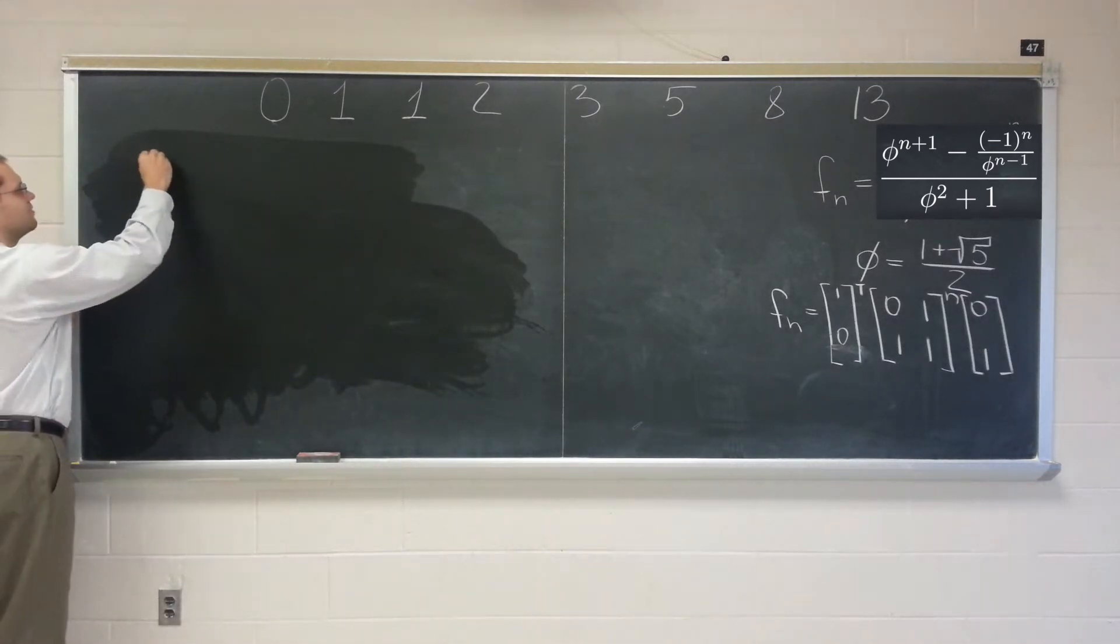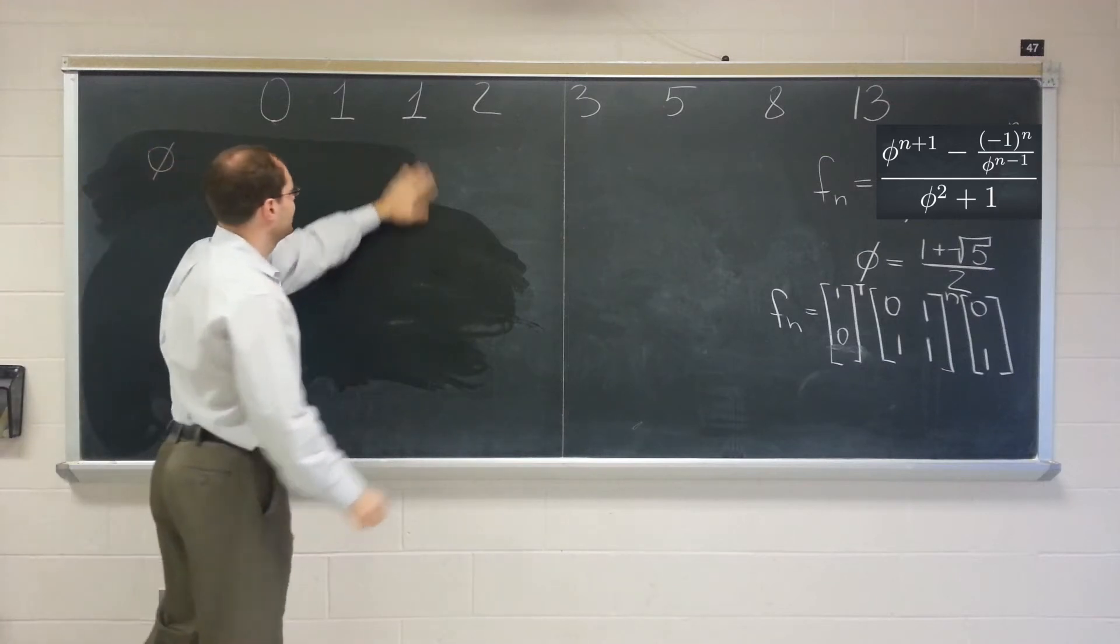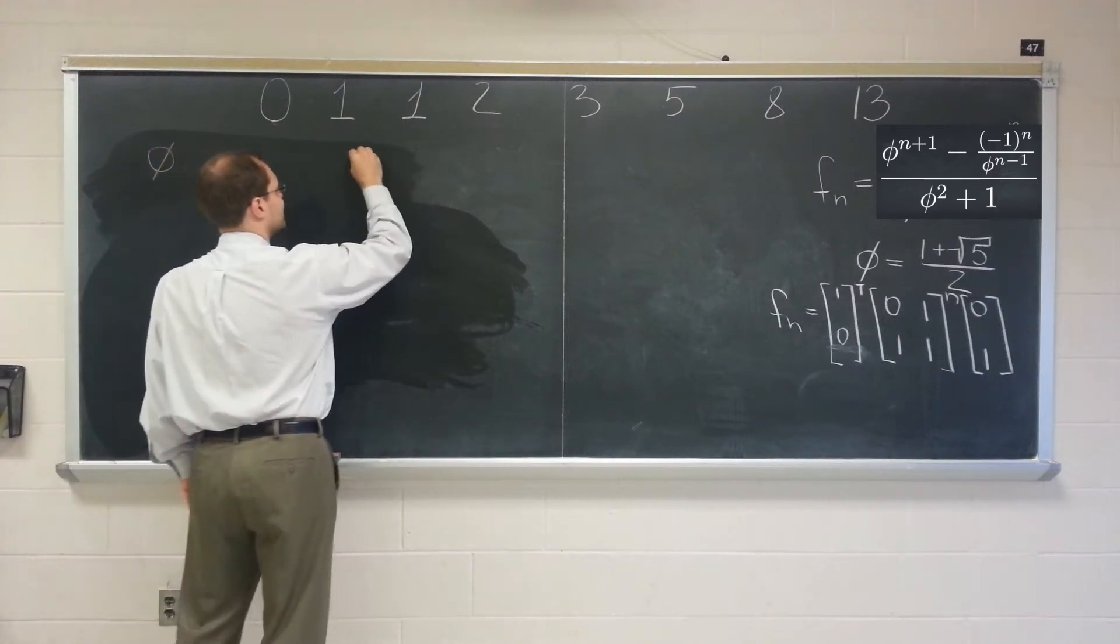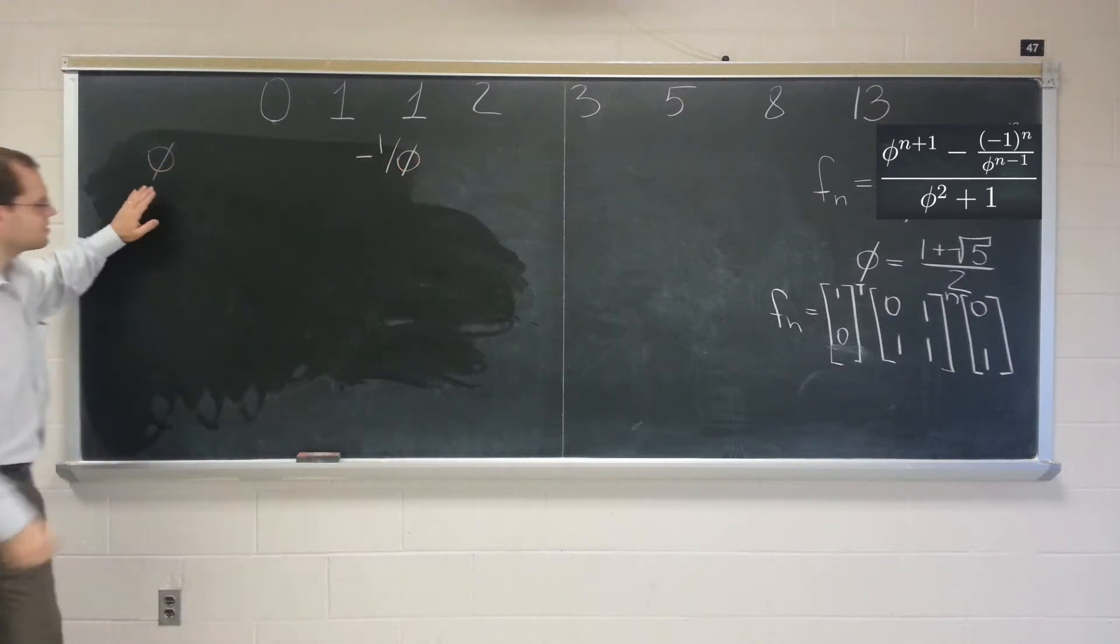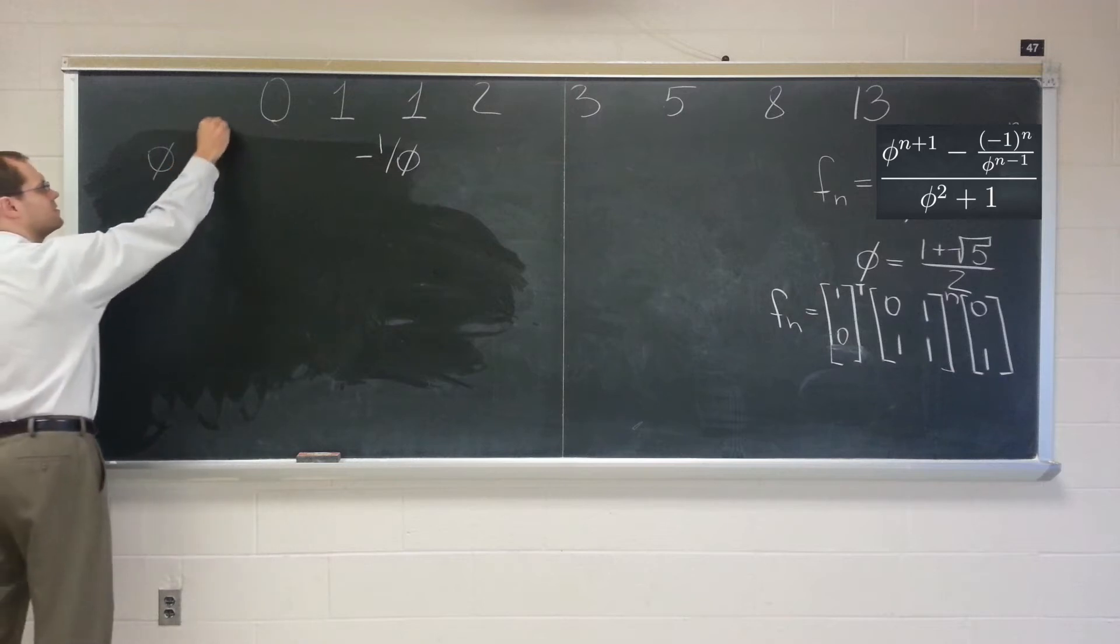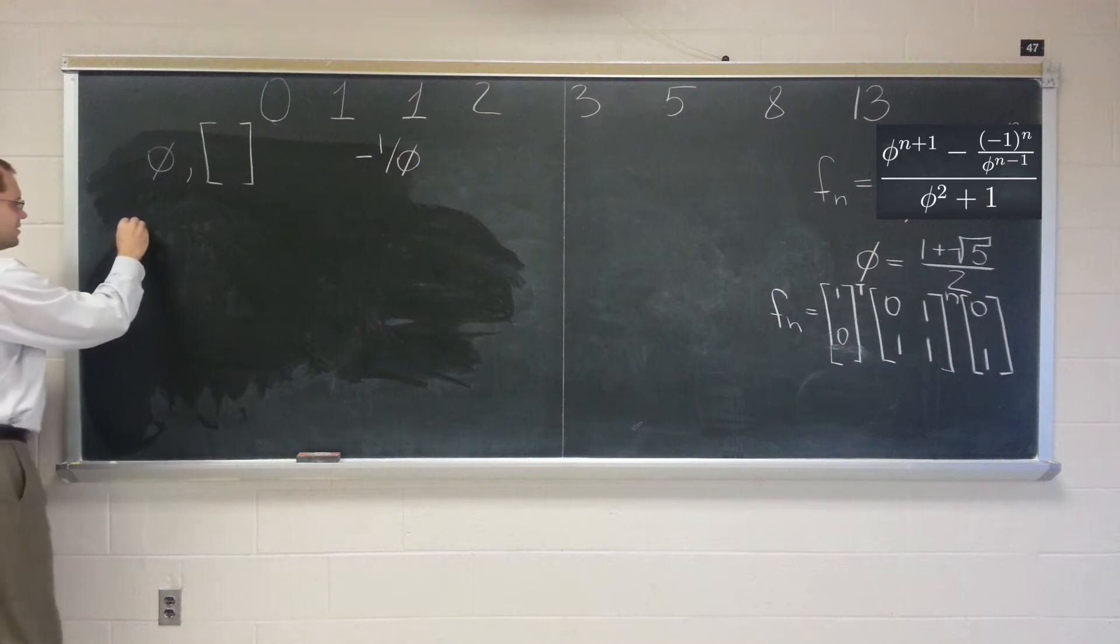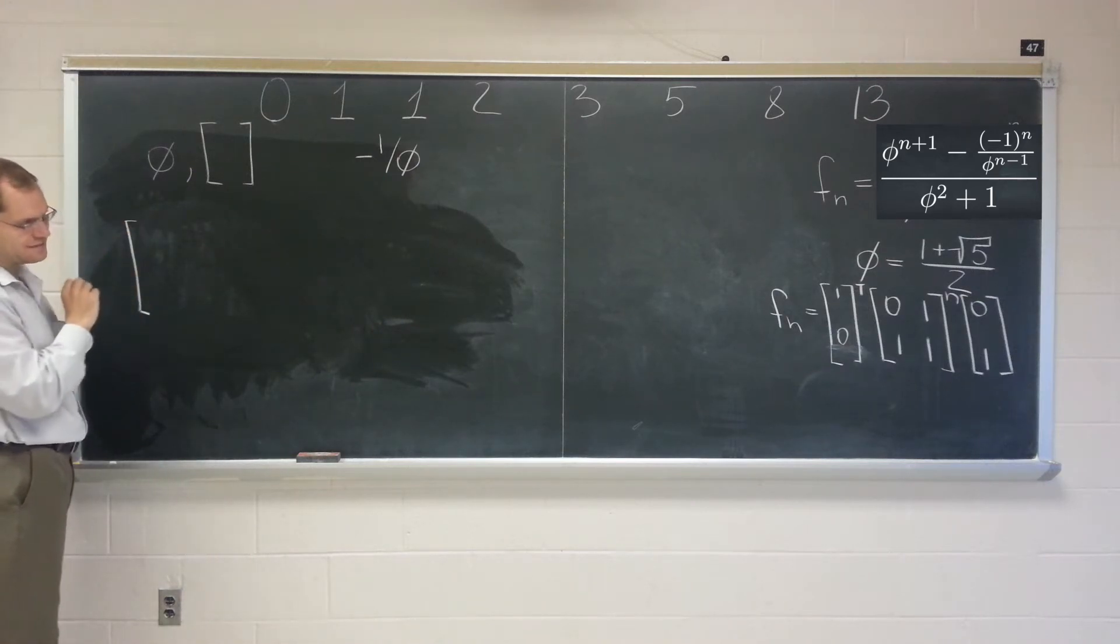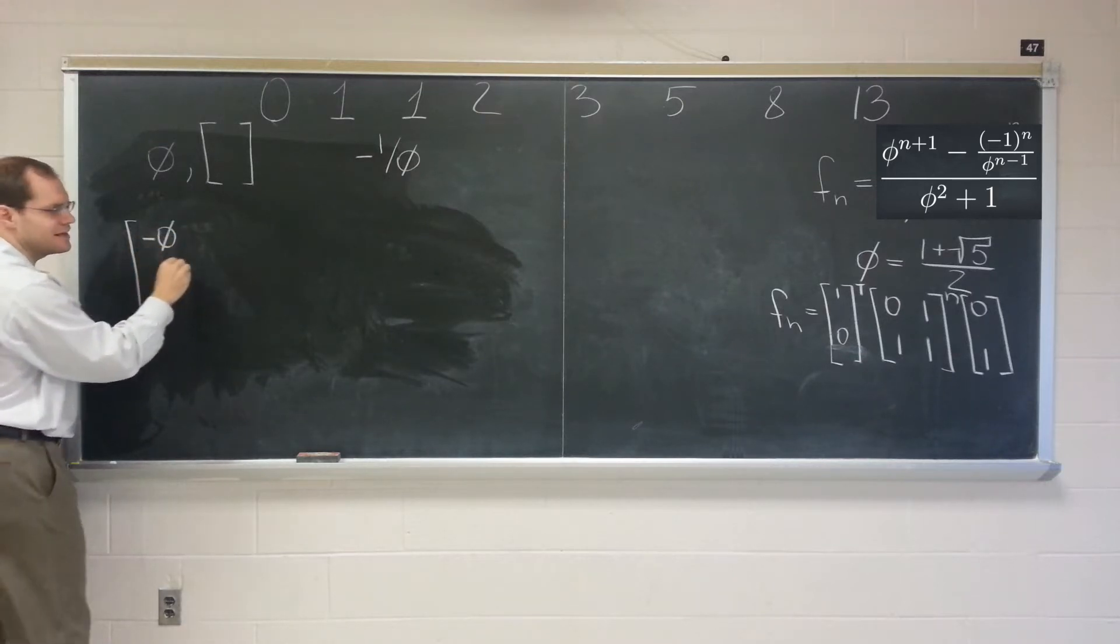Now, so one of them is phi. One of the eigenvalues is phi. And the other eigenvalue is negative 1 over phi. Let's start with this one first. First, we need to determine the corresponding eigenvector. So we'll do it the null space route, the tail end of the eigenvalue procedure. So subtract phi from the diagonal.